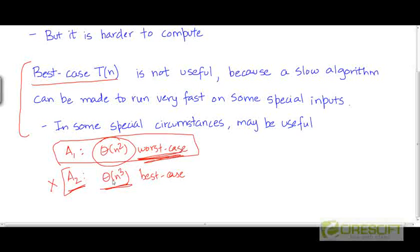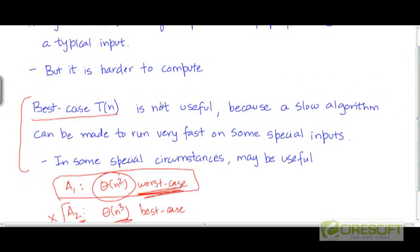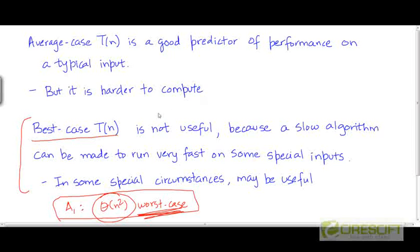But apart from these rare circumstances, best case times are usually not useful, and it's very easy for somebody to cheat by advertising their algorithm as running very fast in the best case, while in reality the algorithm performs very badly on typical inputs or in the worst case. Because it's always pretty easy to optimize an algorithm to handle those special cases very well. That's the reason why best case times are usually considered not useful, or just bogus.